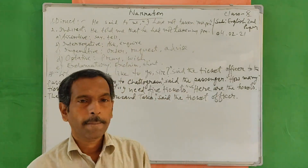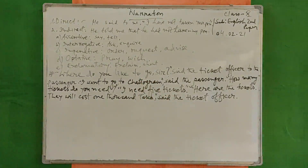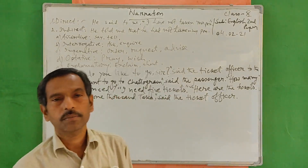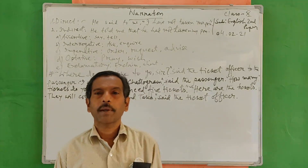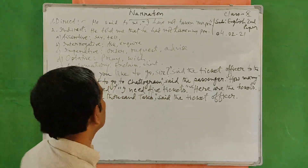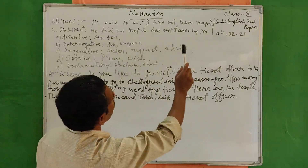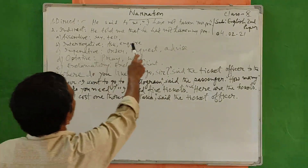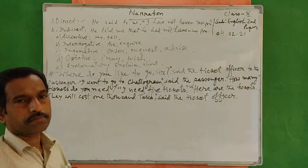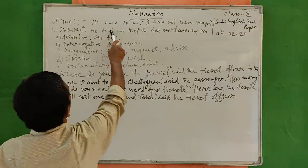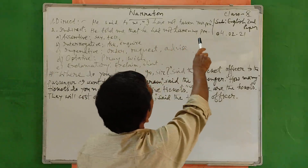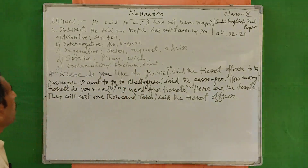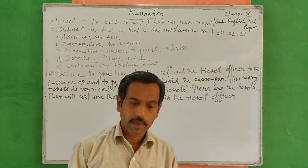There are two kinds of narration: direct and indirect. When a person expresses his opinion directly, this is called direct narration. For example: 'He said to me, have you not taken your pen?' In indirect narration: 'He told me that he had not taken my pen.' Here 'said' is the reporting verb, and the part in inverted commas is the reported speech.